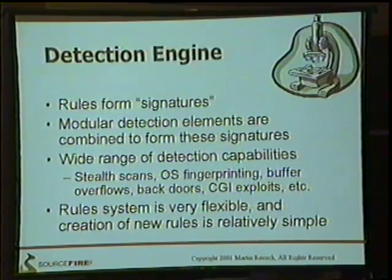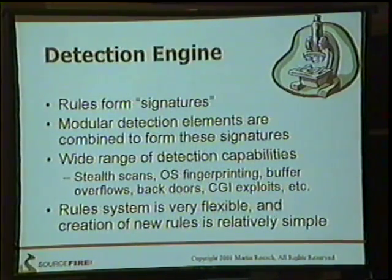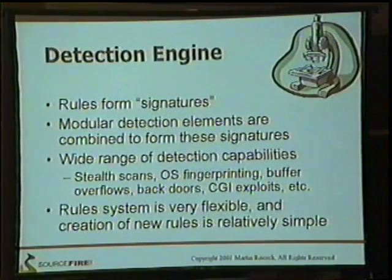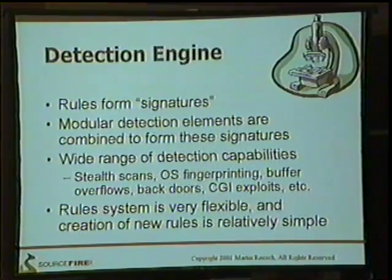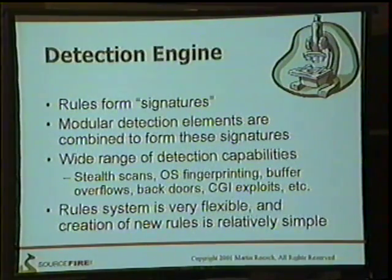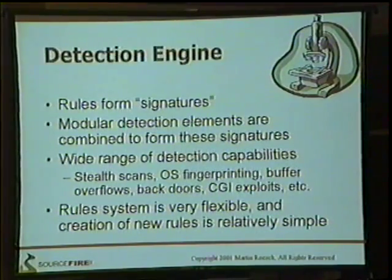The rule system is flexible. Creation of new rules is very easy — Snort uses just a single line per rule in a text file. This allows people to whip rules out pretty quickly. As new events come out, you can write a new rule for Snort. I can usually write them, depending on how in-depth the analysis has to be, in anywhere from 5 to 20 minutes.